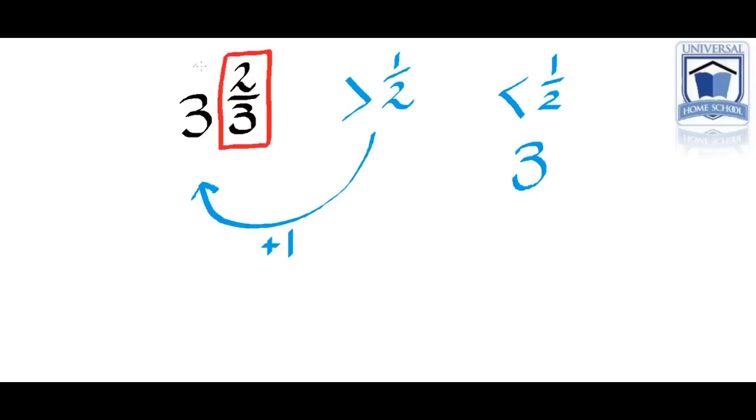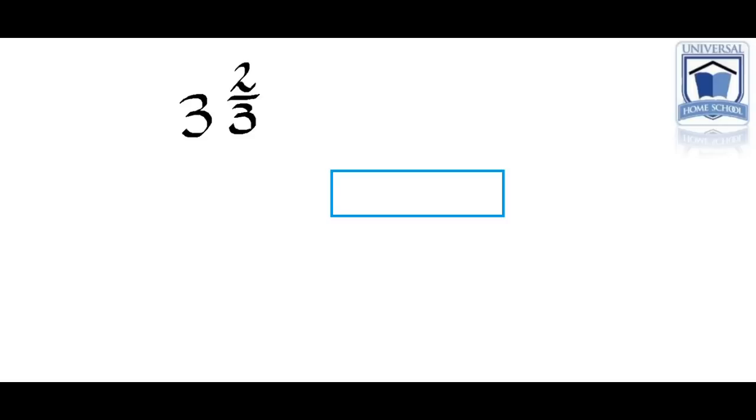So how do we do this? Well one of the easiest ways is to visualize it, to draw it. So just draw the 2 thirds. You don't need to draw the 3, just the fraction of 2 thirds. So you draw a bar of chocolate, say for instance,